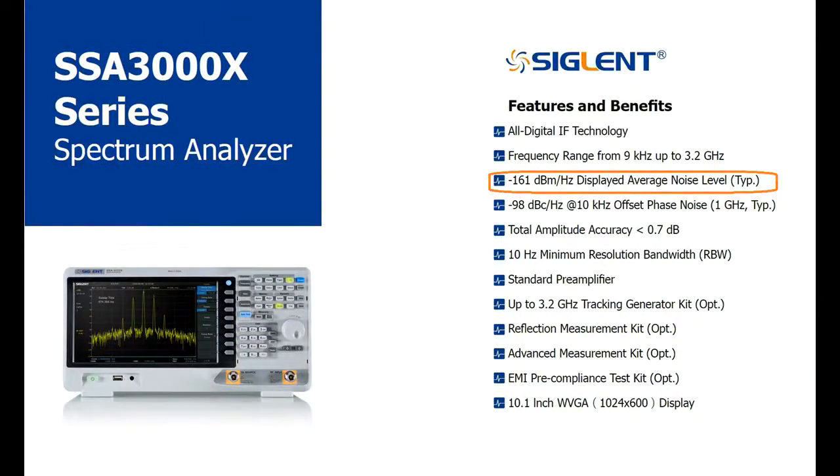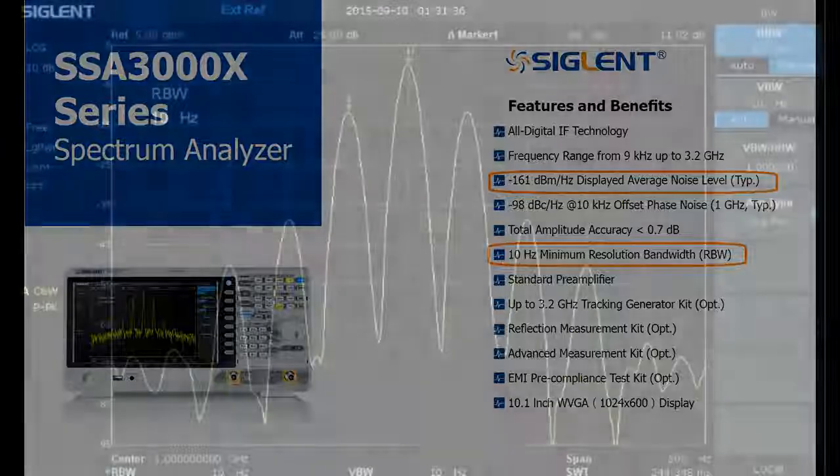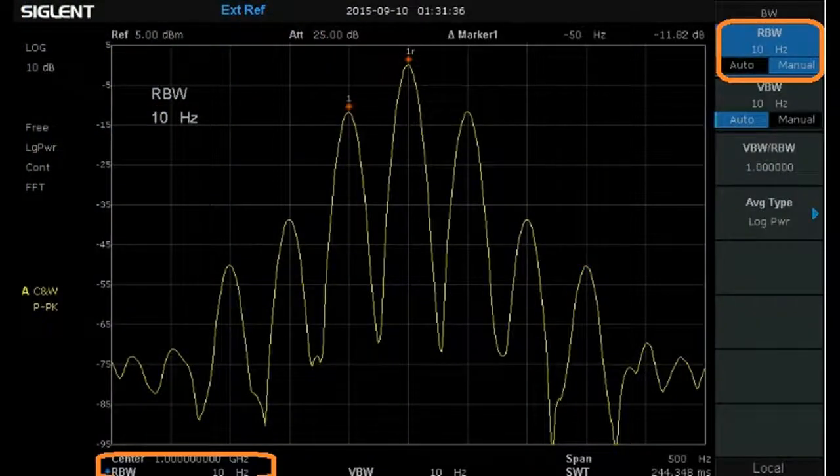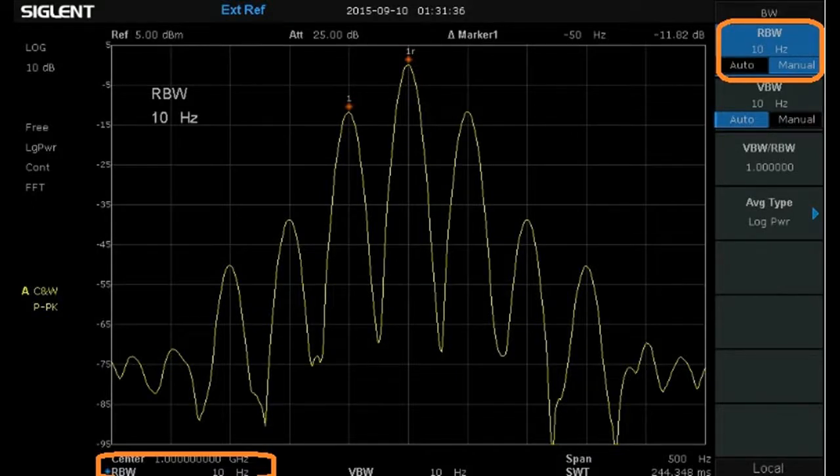The SSA 3000X also features a 10 Hz minimum resolution bandwidth setting. This provides a lower noise floor and also provides better frequency resolution when comparing it to the minimum resolution bandwidth of 100 Hz found on similar analyzers. Basically the lower the resolution bandwidth, the closer you can discern between two signals that are close together, and also it has the added effect of lowering the DANL or noise floor.